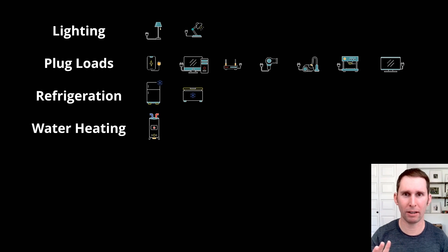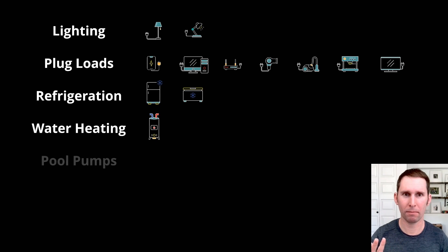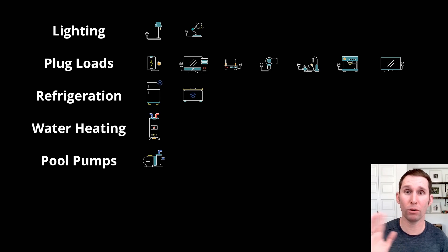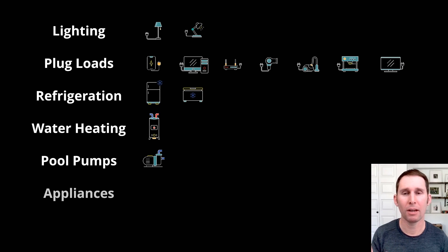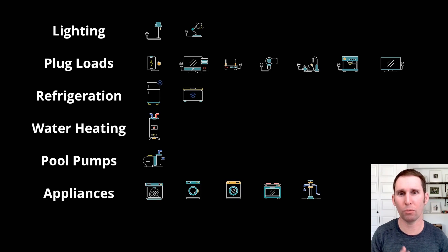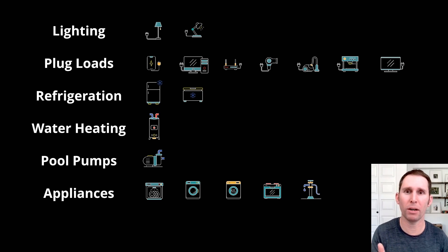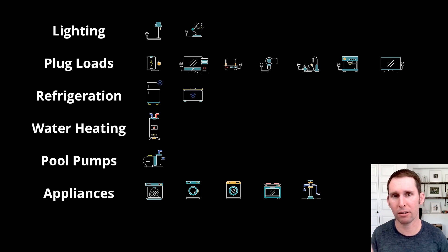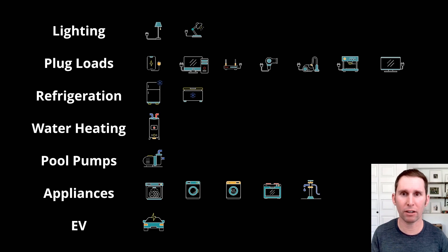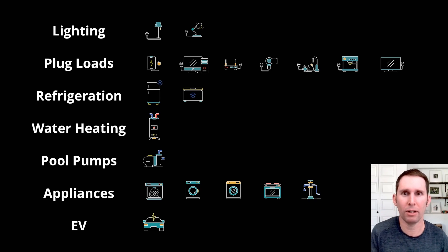Think your refrigeration, your water heating. If you have a pool pump, that's typically run all year long. If you have appliances like dishwashers and washing machines, those are typically run just as much in January as they are in July. Or if you have an electric vehicle, typically people don't drive a lot more in the summertime than they do in the wintertime.